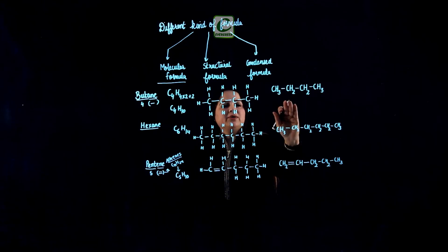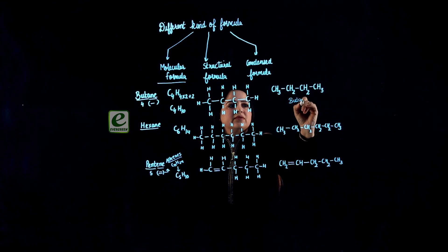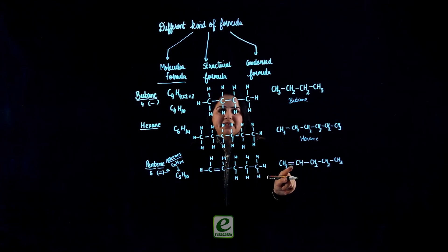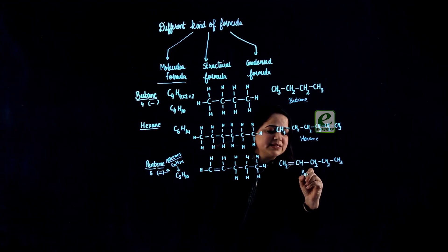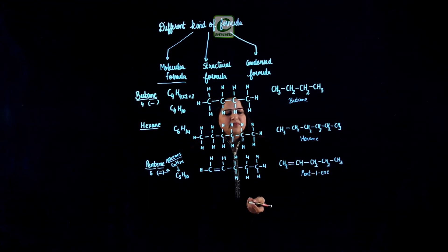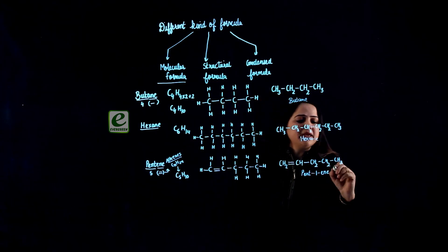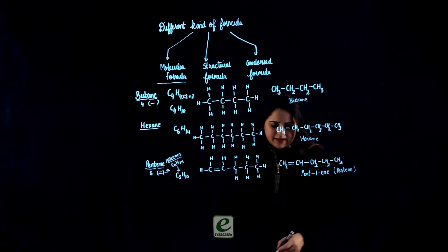In the earlier formulas it was simply butane and hexane, but here we need to focus on the double bond too. Counting the carbons: 1, 2, 3, 4, 5 — this is 'pent'. We have a double bond after the first carbon, so it is pent-1-ene. If the double bond is at position 1, we may or may not write the 1, so it can also be written simply as pentene.